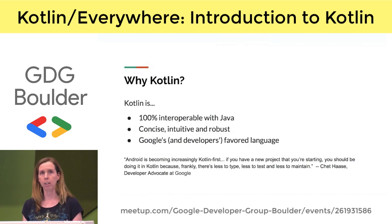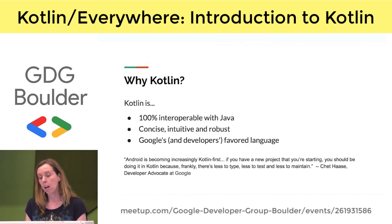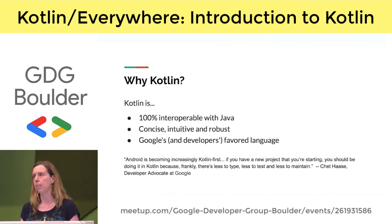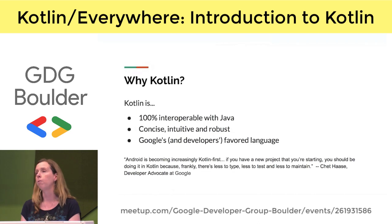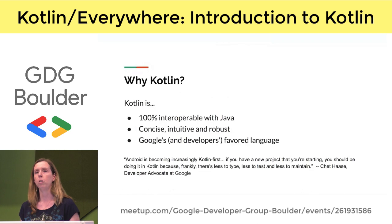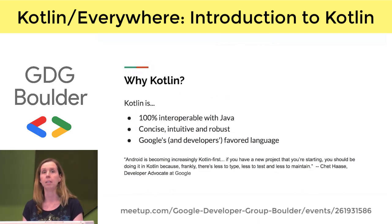Why Kotlin? If you already know Java, why do you need to learn a whole new language? Kotlin was specifically created to improve upon Java and take away some of the pain points. It was also designed to be 100% interoperable with it. That means in your project you can call Java code from Kotlin, or you can call Kotlin code from Java, making it really simple to switch your project over in a gradual fashion.